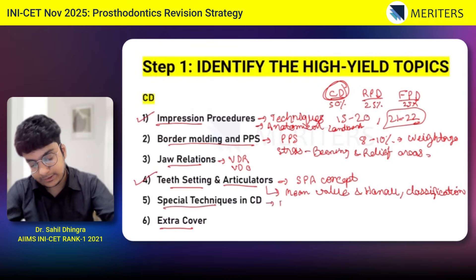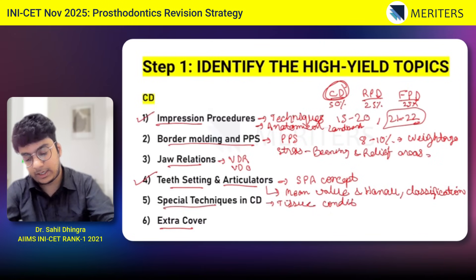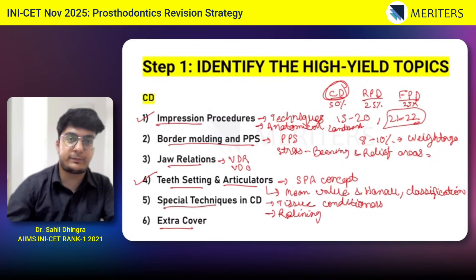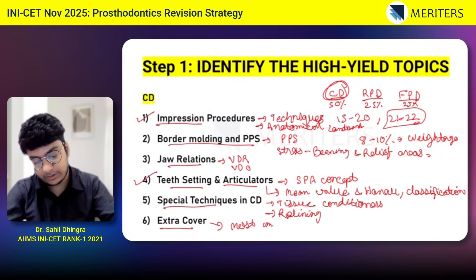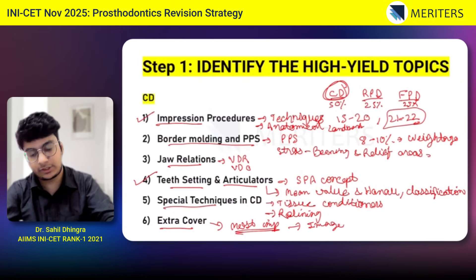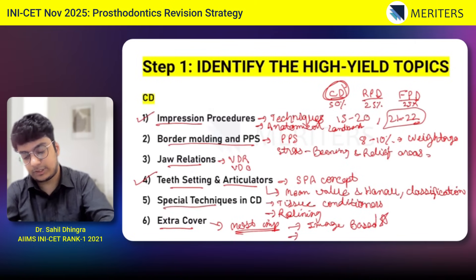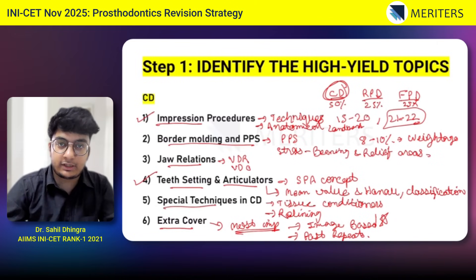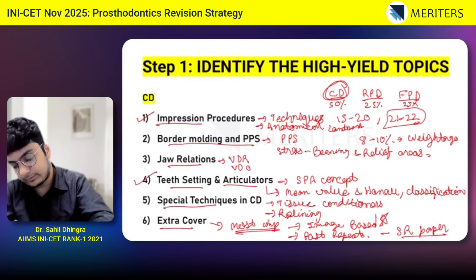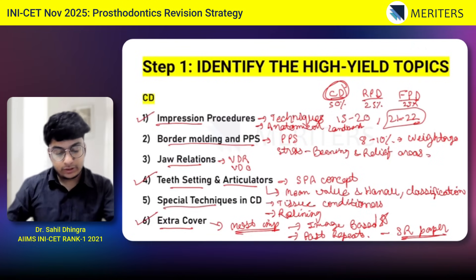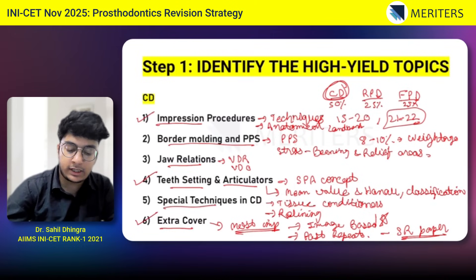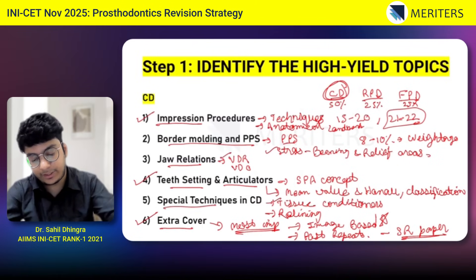The teeth setting and articulator chapter — around 2 to 3 questions you can expect every year in your INICET. In special techniques, the focus is mainly on tissue conditioners and relining/rebasing, which form the major part of the important topics. Extra cover is the most important when it comes to CD because you will see a lot of image-based questions and past repeats. For CD, it's very important to do your SR papers. The three most important topics in CD are impression procedures, teeth setting and articulators, and extra cover. In other chapters, focus on high yield topics like posterior palatal seal, stress bearing areas, VDR/VDO, and tissue conditioners.